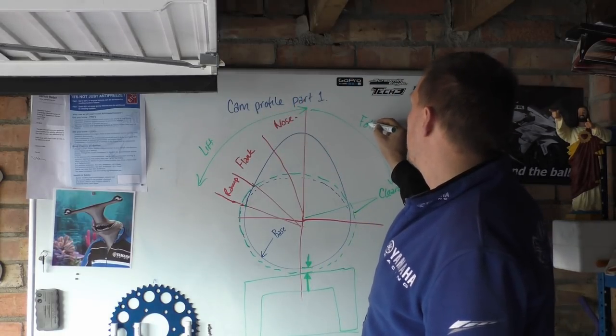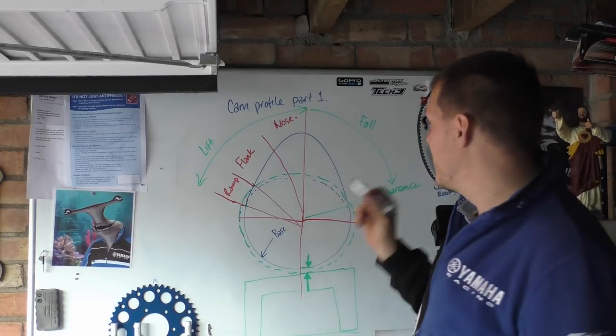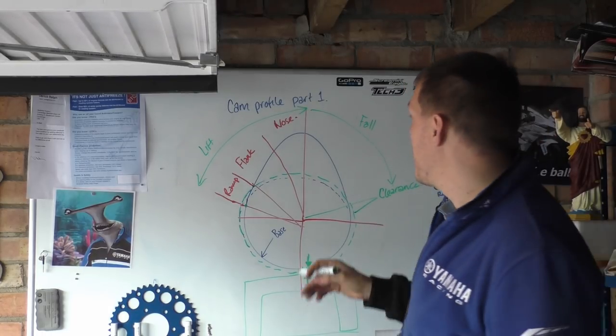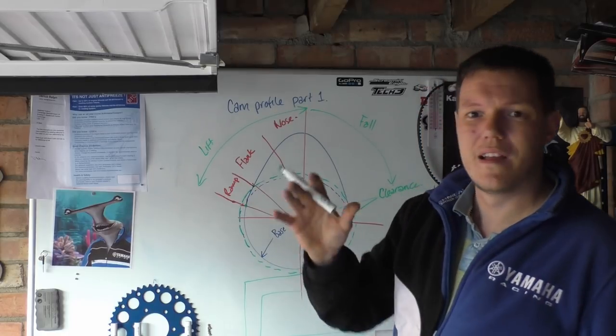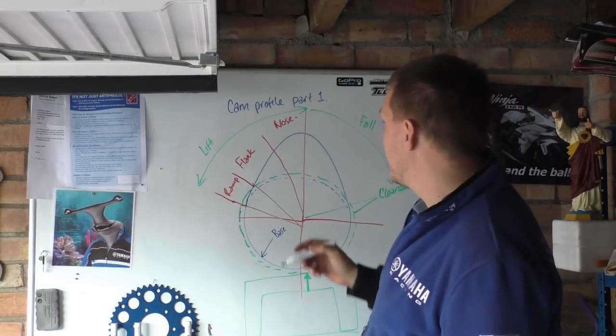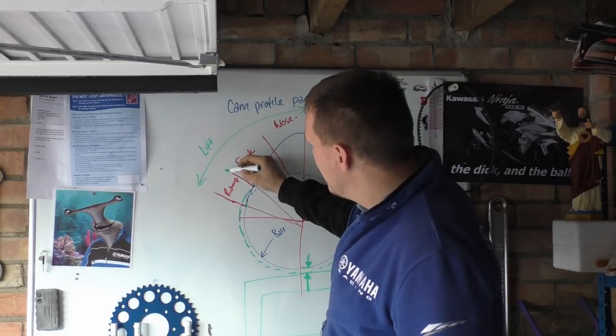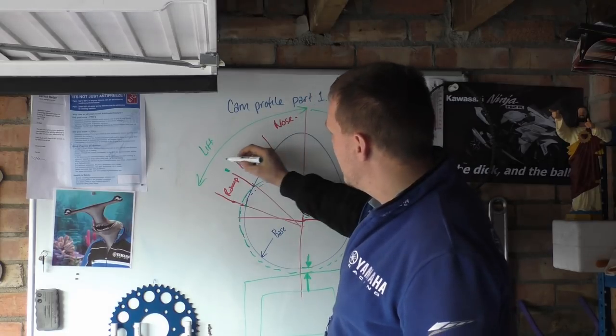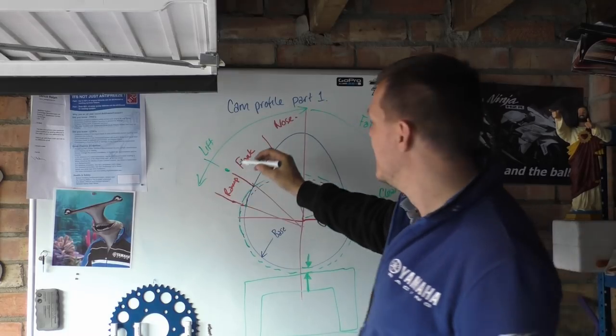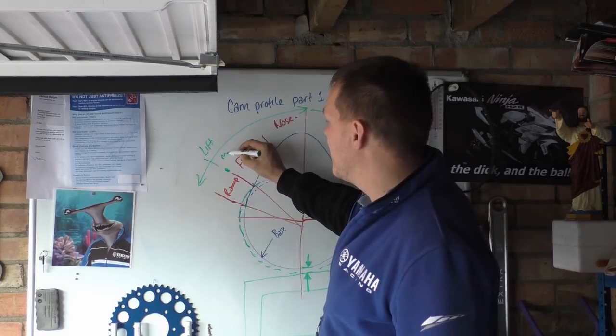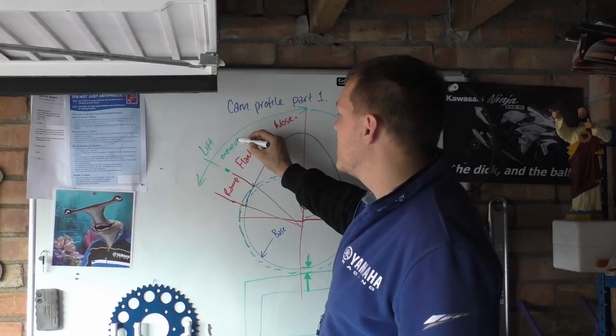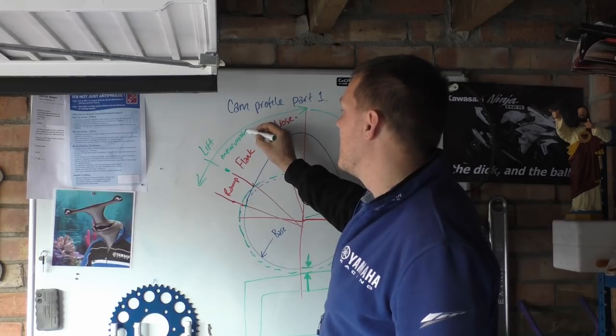Now you do get asymmetric cams, and we'll do that - we'll get to all that. That's very important because you can actually control how your valve closes and all the rest of it. From our flank here to our nose is our lift - we call this the lift section, but this is your actual measurable lift. So that's your measurable lift there.